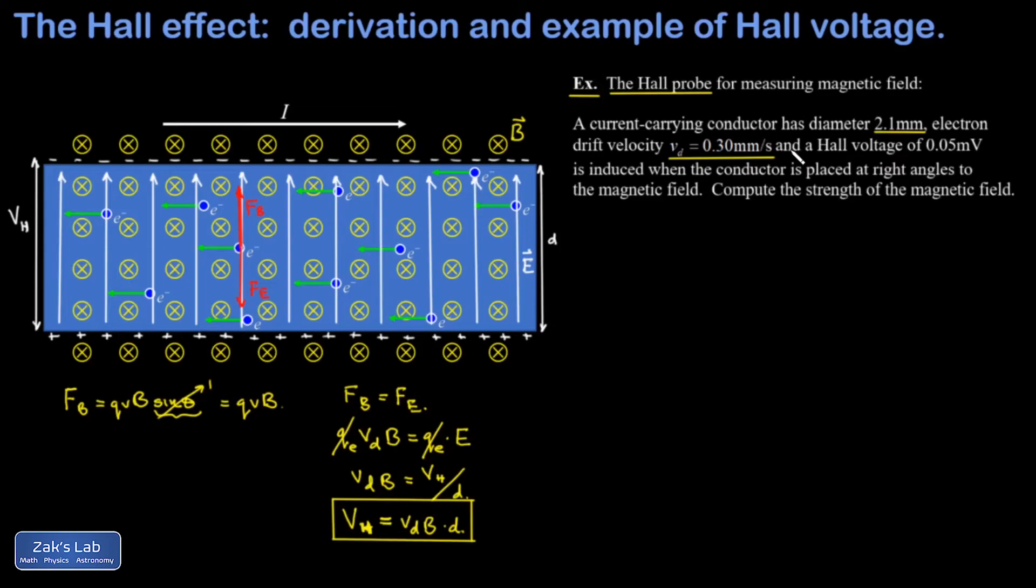To calibrate this device, you would have to figure out what the drift velocity is depending on how much current is going through it, and this has been done by the manufacturer in advance. We're told the Hall voltage of 0.05 millivolts has been induced